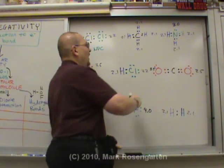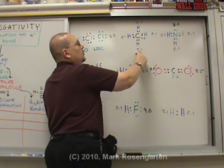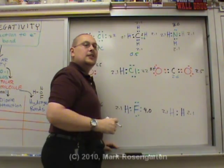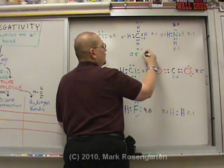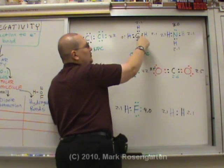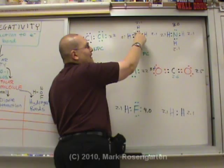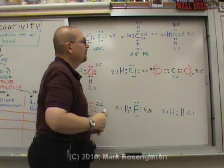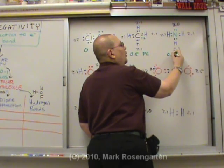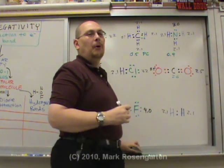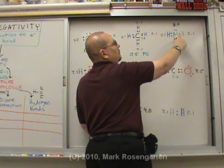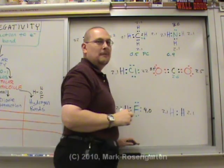Carbon's electronegativity is 2.6. The difference between hydrogen's 2.1 and carbon's 2.6 is 0.5, which puts us in the polar covalent range - those bonds are polar covalent. The difference between hydrogen's 2.1 and nitrogen's 3.0 is 0.9, which again puts it in the polar covalent range - those are polar covalent bonds.